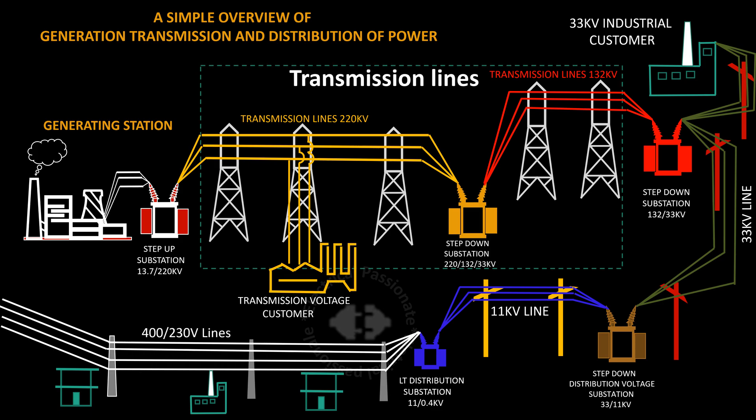Please watch the picture. In the picture we shall distinguish transmission lines from distribution lines. Here there are 220 kV, 132 kV, 33 kV, 11 kV, and 400 or 230 volt lines.